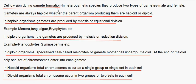Cell Division During Gamete Formation: In heterogametic species, two types of gametes — male and female — are produced. Gametes are always haploid, whether the parent organism producing them is haploid or diploid. In haploid organisms, gametes are produced by mitosis or equational division. Examples include monera, fungi, algae, and bryophytes.